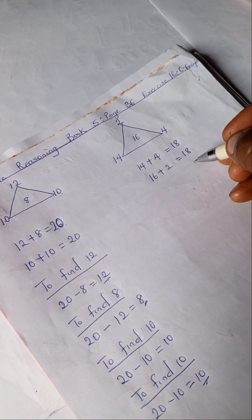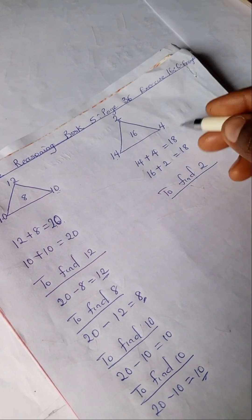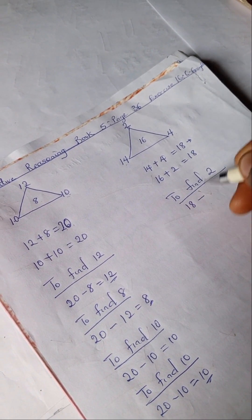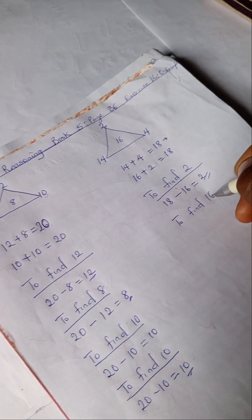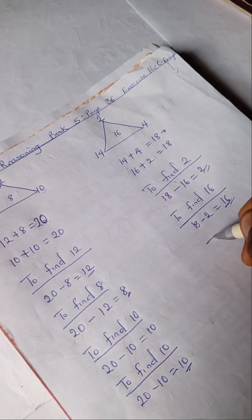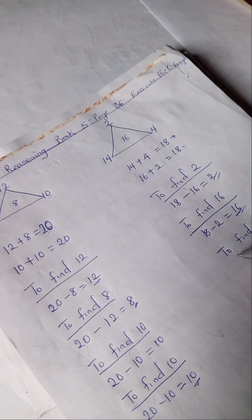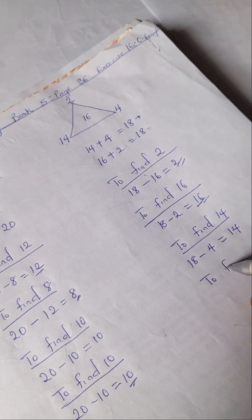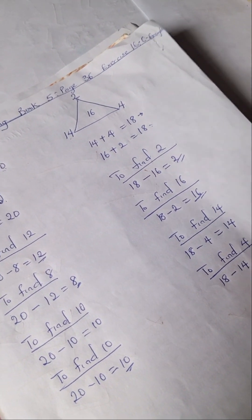So let us do the same thing for this example. To find our 2, we're going to be using this first equation because it's complete. So we have 18 minus 16 is 2. And to find 16, we have 18 minus 2 is 16. And to find 14, we have 18 minus 14 is 4.